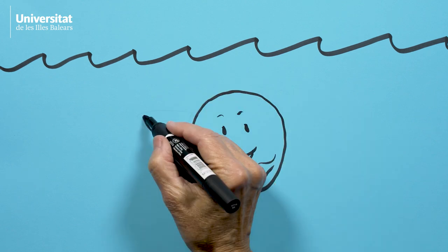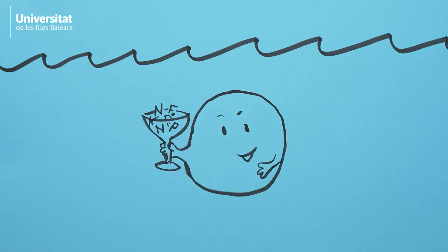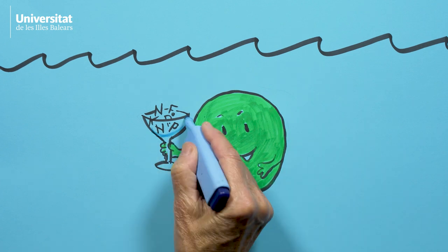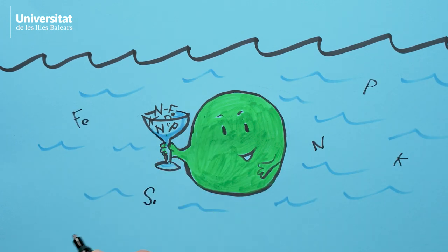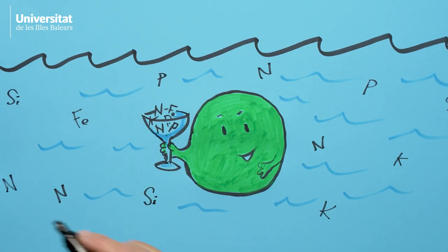But in order to live and reproduce, phytoplankton need more than just water, CO2, and sunlight. They also need elements like phosphorus and nitrogen. Correct, Prochlorococcus? Yep, she says that's so.